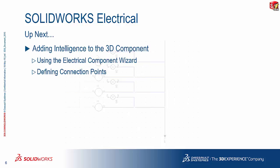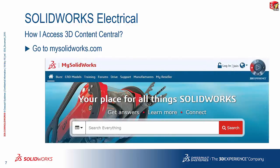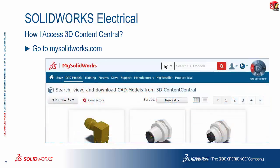Up next, we're going to talk about how we can add intelligence to the 3D component with the electrical component wizard — specifically creating connection points — but that's in part 2. Before ending, I'll address another commonly raised question: how do you access 3D Content Central? The most straightforward approach is to go to mysolidworks.com and log in. If you don't have a login, you can join. There's a section called CAD Models, which is where I found the connector parts I required for this presentation.